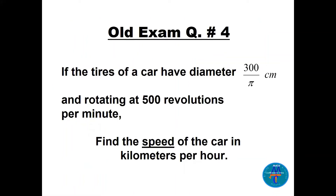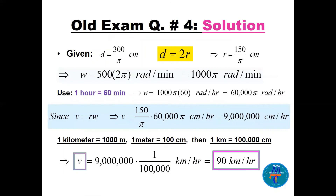Question number four: tires of a car have a diameter of 300/π centimeters and are rotating at 500 revolutions per minute. We need to find the speed of the car in kilometers per hour. We'll need to convert centimeters to kilometers and minutes to hours. The diameter is 300/π, and since diameter equals 2r, the radius r equals 150/π centimeters.